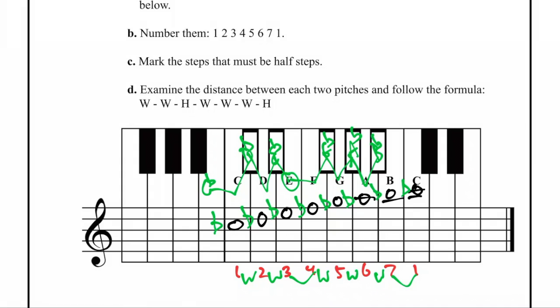And now we need a half step. B-flat to, well, it can't be B, we already used B. It has to be C. Therefore, it is C-flat. The C-flat major scale has seven flats.